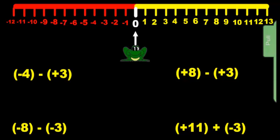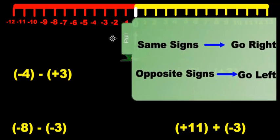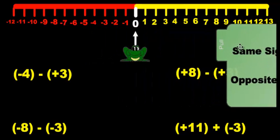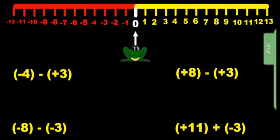The trick is this: if the signs are the same — and I'll show you what signs we're talking about — if the signs are the same, go to the right. Signs are the same, go to the right. If the signs are different, in other words if they are opposite signs, you're going to go to the left. Same signs, go to the right. Opposite signs, go to the left. Remember that, and I'm going to show you what signs I'm talking about.